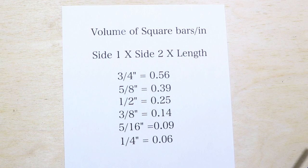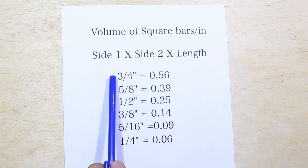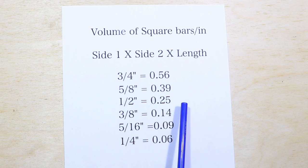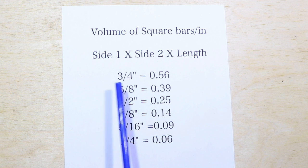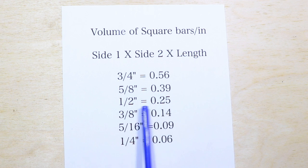So by simply looking at a list like this you can start to make some assumptions that are actually pretty accurate. Say for example you had some 3/4" bar you needed to hammer it down to 1/2", so you know right away by looking at the numbers that you're going to get twice as much 1/2" bar as the 3/4" bar that you started out with.